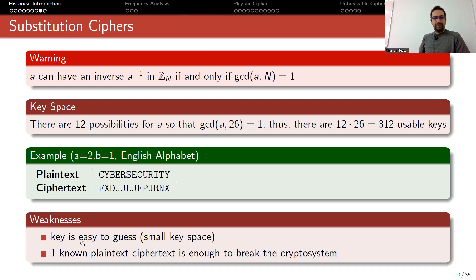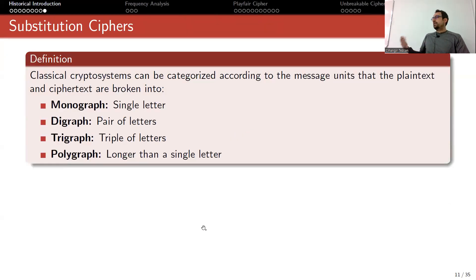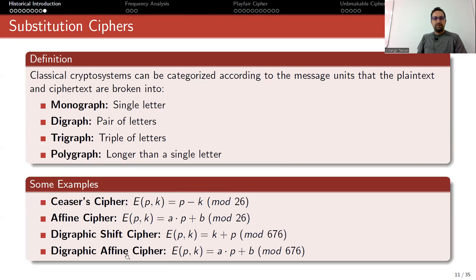As you can see, the key is easy to guess - small key space, one known plaintext-ciphertext is enough to break the crypto system. You can make it more complicated. Classic crypto systems can be categorized according to the message units that plaintext and ciphertext are broken into. If you're replacing a single letter with another letter as we've done so far, we call it monograph. If you do it on pair of letters it's digraph, three letters is trigraph, polygraph, and so on.